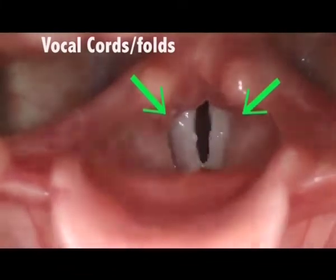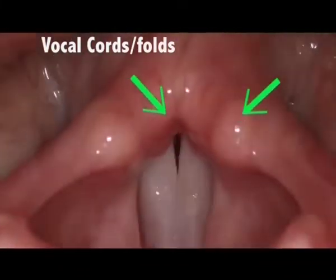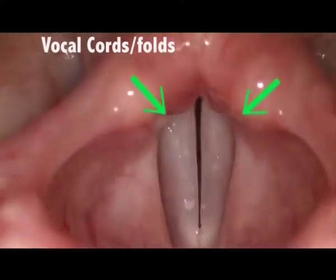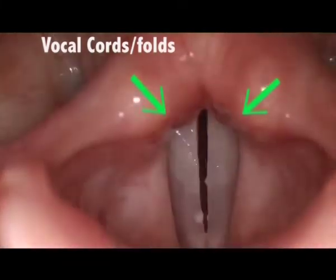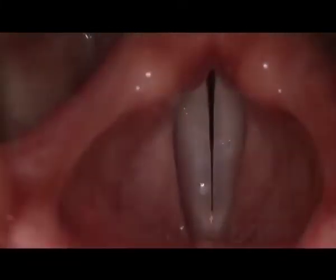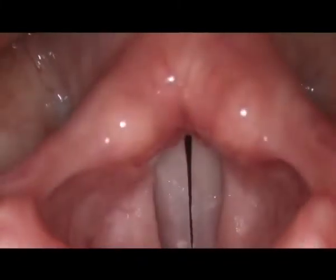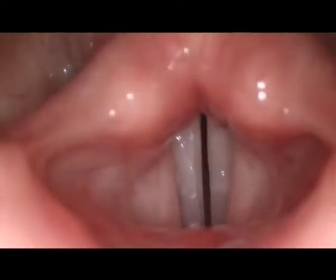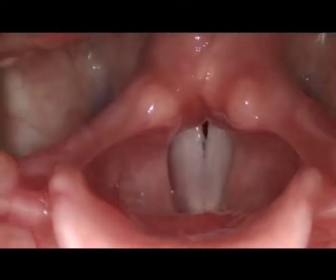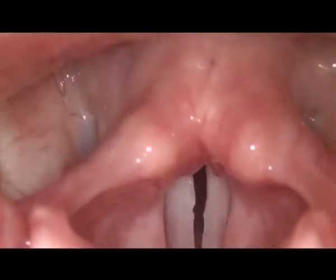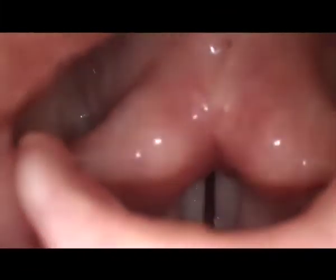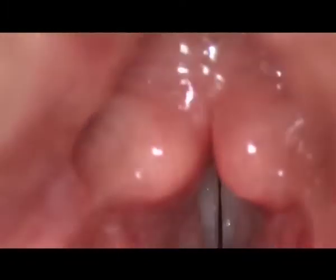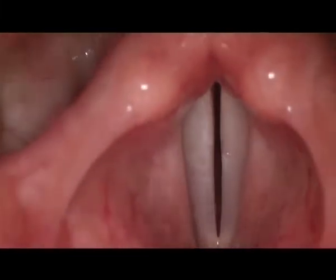The pressure builds up below the glottis. Once this pressure is great enough, it forces the folds to open from below until eventually they come open. The tension across the vocal folds then forces them back together again, making a closure again. The process now repeats itself: the folds are closed and air cannot escape through the glottis, so the pressure builds up, the folds open, the pressure equalizes, and the folds close again.